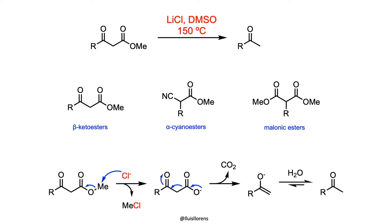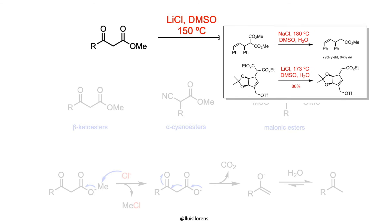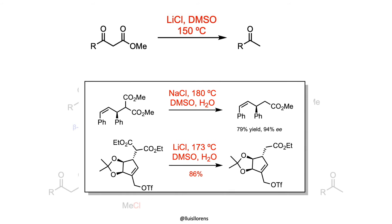Since the reaction conditions are essentially neutral, both acid and base-sensitive substrates can be used. Another advantage involves the chemoselectivity and the functional group tolerance of the method, which is very high. Double bonds are not isomerized, and in many cases, labile stereocenters are not racemized.